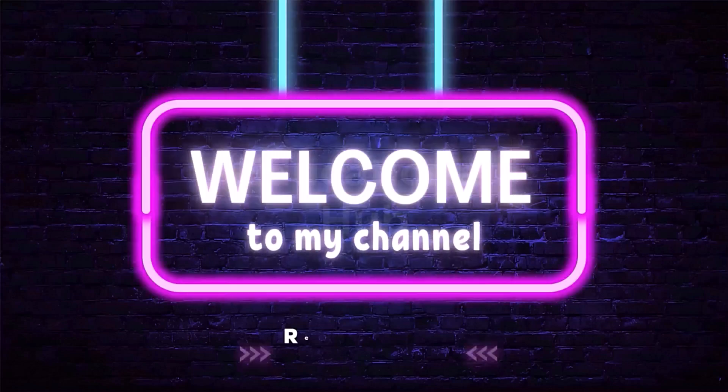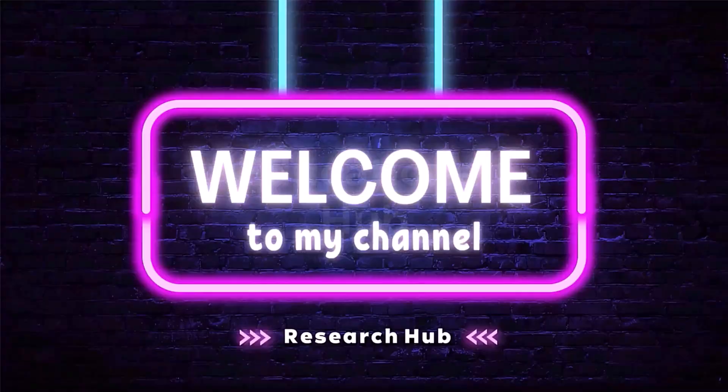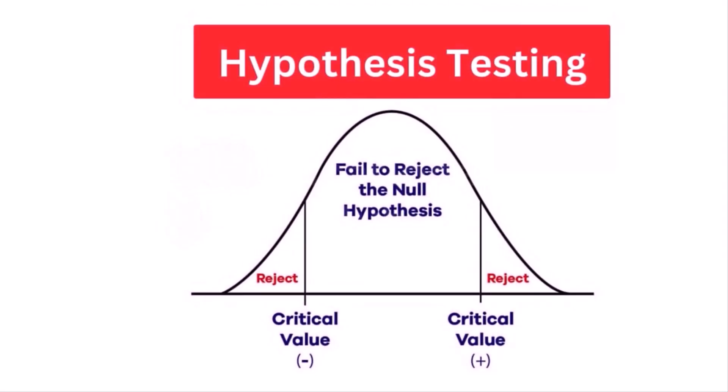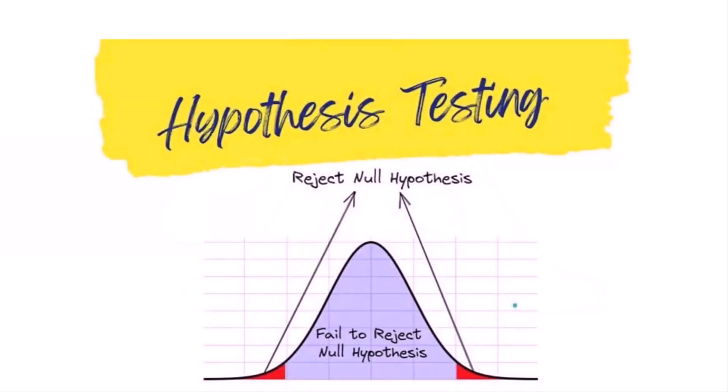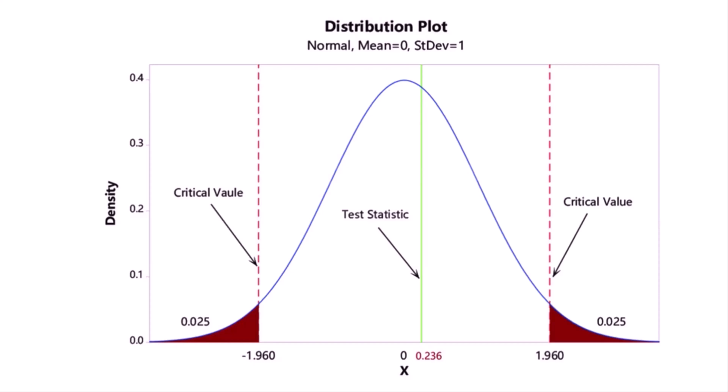Welcome to Research Hub. Hypothesis testing is a tool for making statistical inferences about the population data. It is an analysis tool that tests assumptions and determines how likely something is within a given standard of accuracy. Hypothesis testing provides a way to verify whether the results of an experiment are valid. A null hypothesis and an alternative hypothesis are set up before performing the hypothesis testing, which helps to arrive at a conclusion regarding the sample obtained from the population.